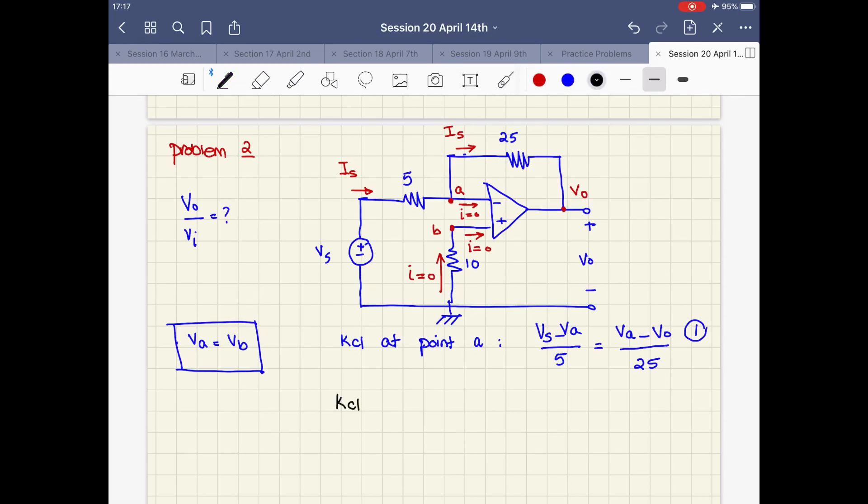At point b, I have a current coming from the ground going through the 10-ohm. That would be zero minus vb over 10, which equals the current going into the op-amp, which is zero. From here, vb is equal to zero.